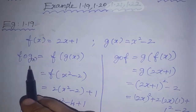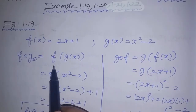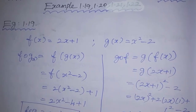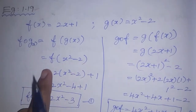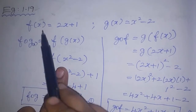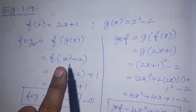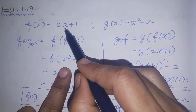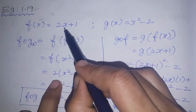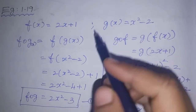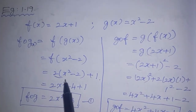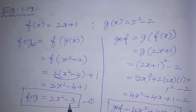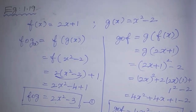Let's use x as the variable. Then let's get f of g of x. The meaning of f of g of x — let's go to g(x) which is x squared minus 2. Now the meaning of f of x squared minus 2, substituting into f(x).